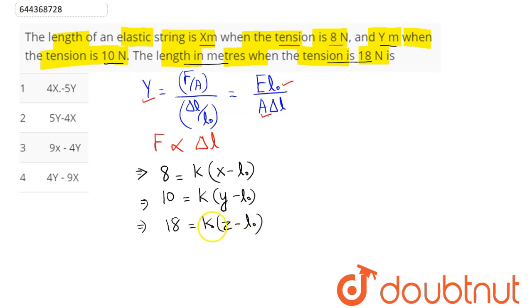Now by these three equations, we need to simplify Z in terms of X and Y. So here first we divide first and second equation. Hence we have here as 8 by 10 is equal to our X minus L0 divided by Y minus L0 as K and K cancels out. So here we can cross multiply.